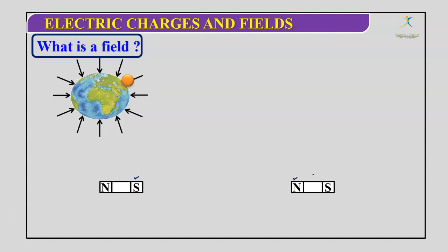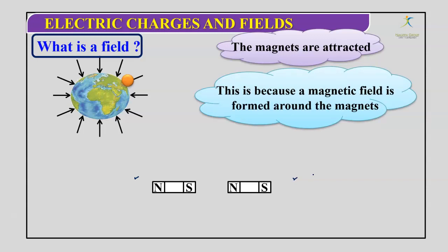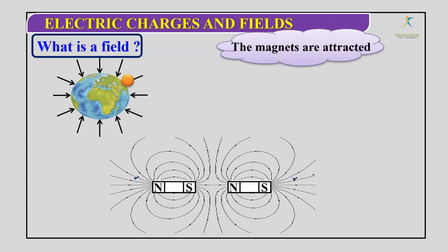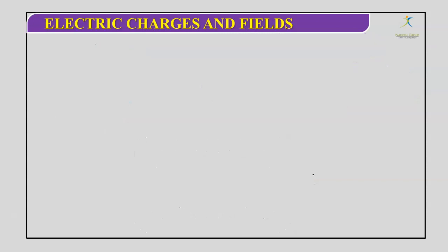Like gravitational field and magnetic field, here we have electric field. Field is a space property — that point must be noted. So for electric charges: similar charges repel each other, and opposite charges attract each other. This happens because of an electric field formed around electric charges. For a positive charge, electric field lines are always radially outward.